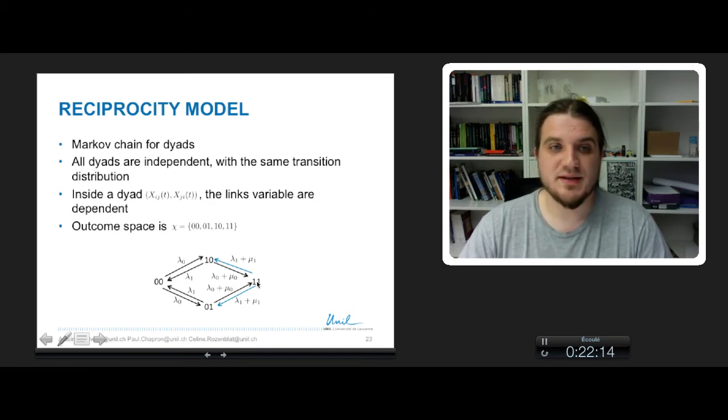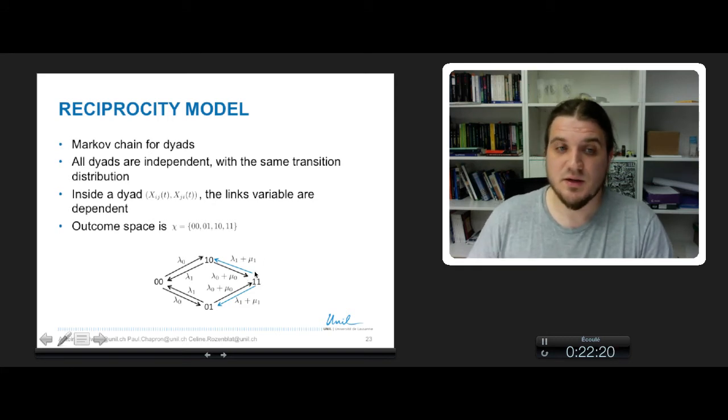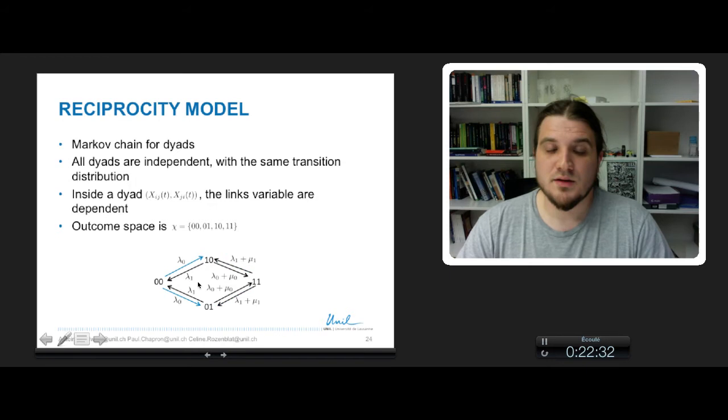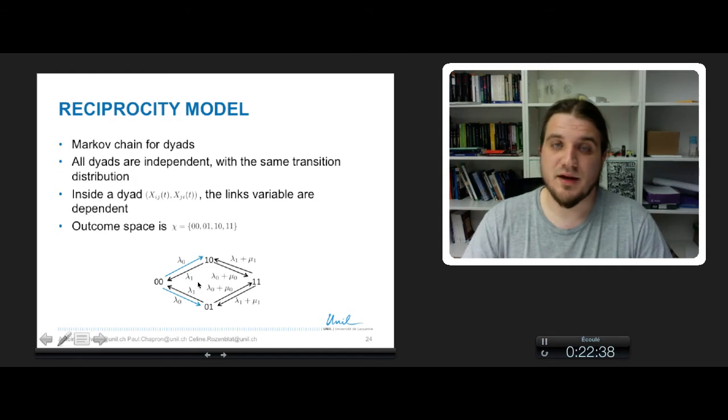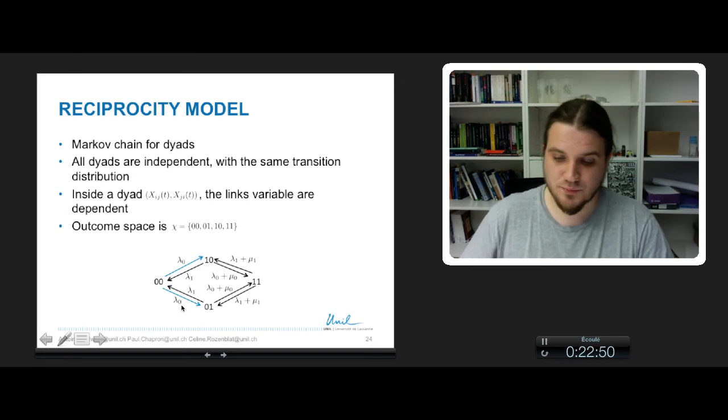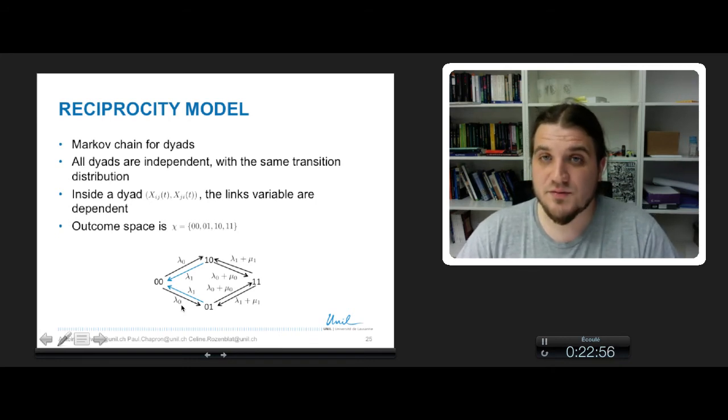The second rate is lambda 1 plus mu 1, which is the destroying of reciprocated links, because you were in the state 1 1, and you arrive in state 1 0 or 0 1. The rate lambda 0 is the same rate as in the independent arc model, so it's the rate of creation of a link from i to j. Starting from the state 0 0, it can create 1 0 or 0 1. And the final rate is lambda 1, which is the destruction of a single link from i to j or j to i.